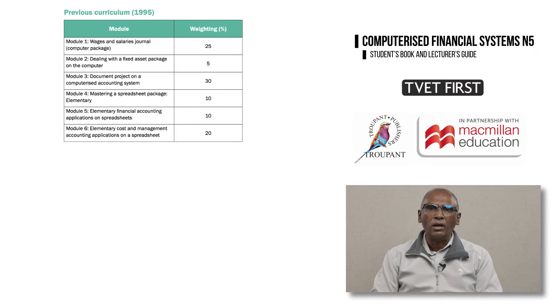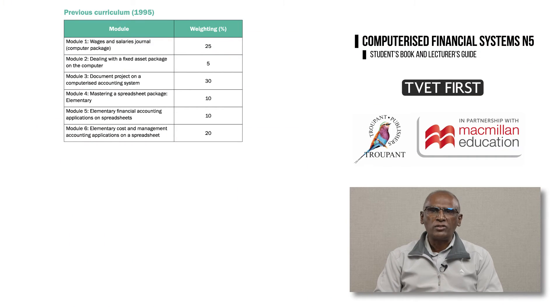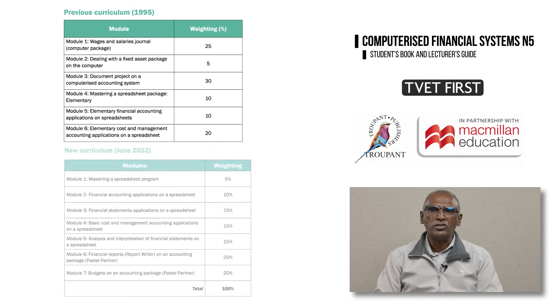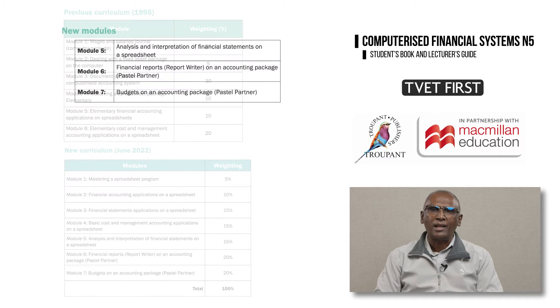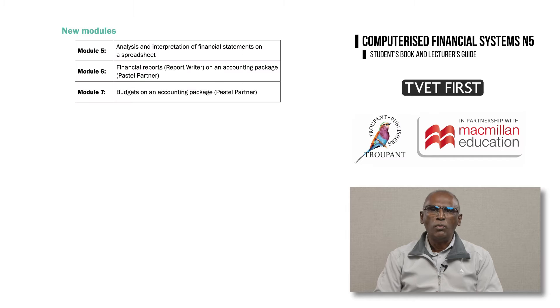Let's start with the major changes between the old CFS N5 curriculum and the new one. The old syllabus consisted of six modules, whereas the new syllabus has seven modules. There are three new modules in the N5 syllabus, which were previously taught in N6.